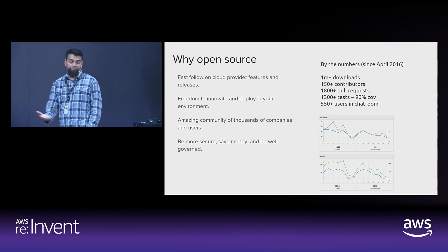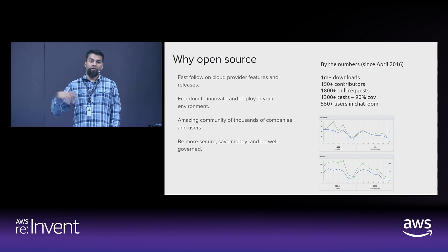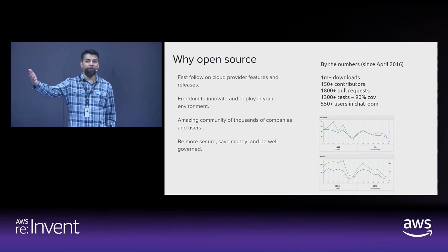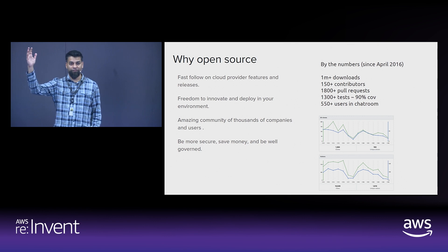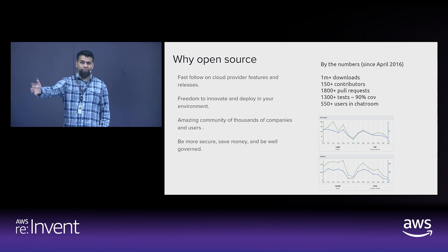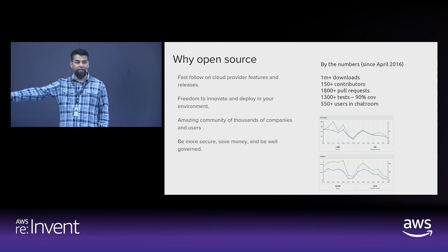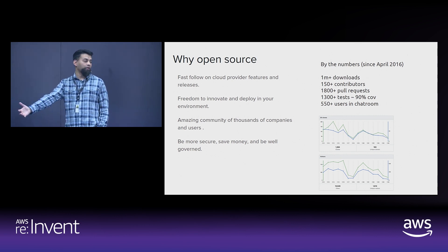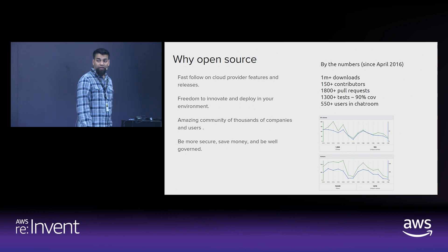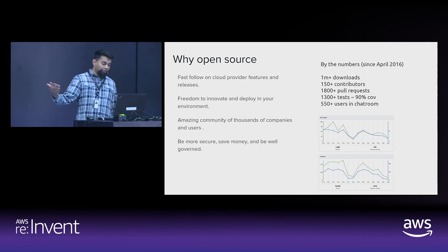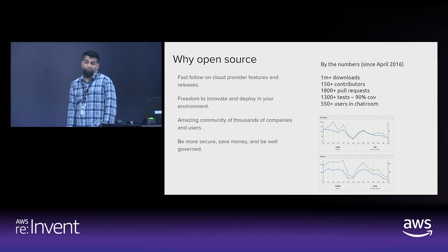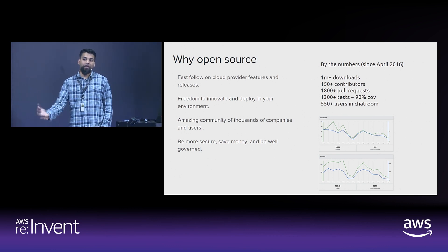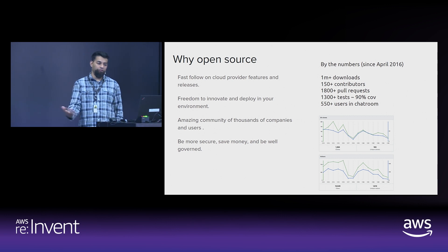There are lots of benefits to being open source. Open source won application development because of faster turnaround for features. We track closely to AWS release notes — S3 public block went out about a week and a half ago and we had it in the code base within three or four days. Everyone is empowered to contribute and add features, and we've created an amazing community of 600 people in our chat channel actively helping each other craft policies and understand the tool.